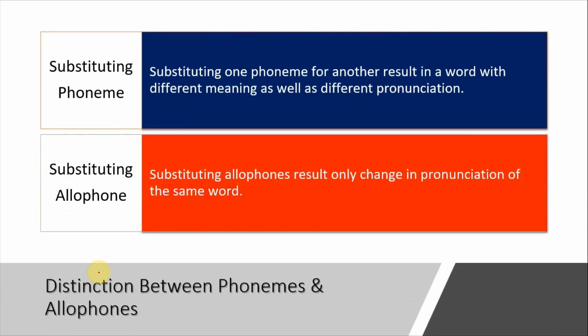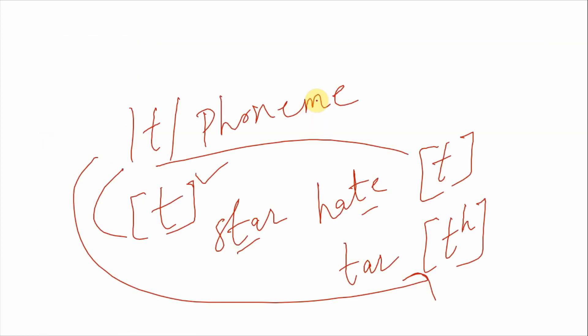Now, the distinction between phonemes and allophones: phonemes and allophones are different. Substituting one phoneme for another results in a word with a different meaning as well as different pronunciation. That is, when we replace one phoneme with another, the meaning of the word changes.